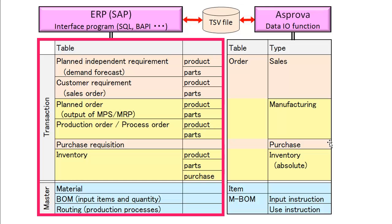ERP has these data tables: planned independent requirement, customer requirement, planned order, production order or process order, purchase requisition, and inventory. For master information: material, bond, and routing.